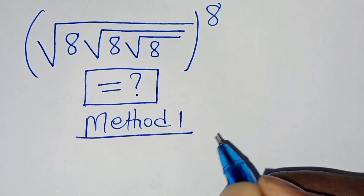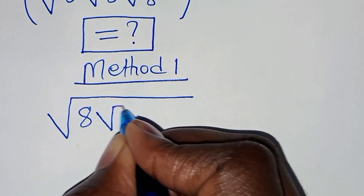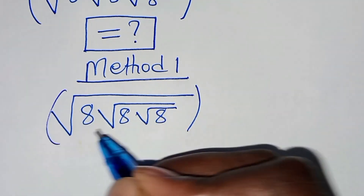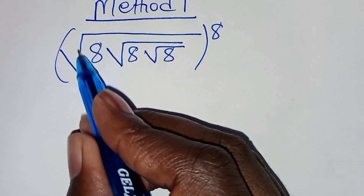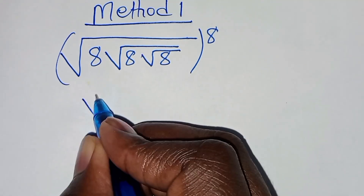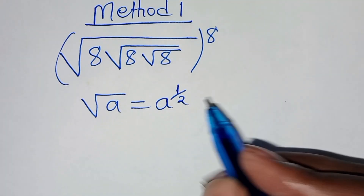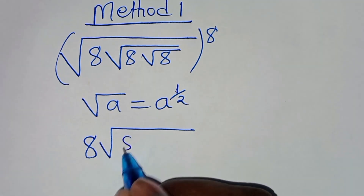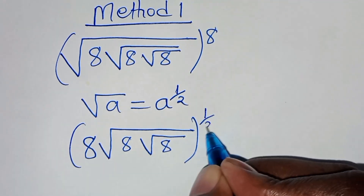Starting with method 1, we have the square root of 8 multiplied by square root of 8 multiplied by square root of 8, raised to power 8. The first thing to do here is eliminate the square root sign by applying the property that the square root of a can be expressed as a raised to power one half. So we can express this as 8 times square root of 8 times square root of 8, raised to power one half, times 8.